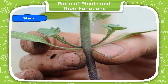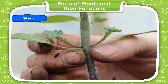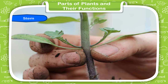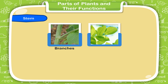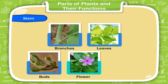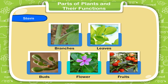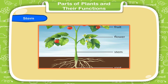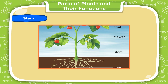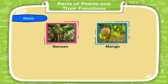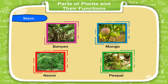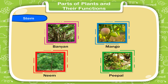Stem. The stem is the main part of the shoot that supports the plant. It bears branches, leaves, buds, flowers, and fruits. It helps the plant to stand erect. Some plants like banyan, mango, neem, and peepal have very hard, woody, and strong stems called trunks.